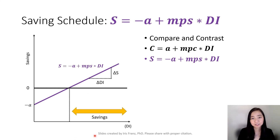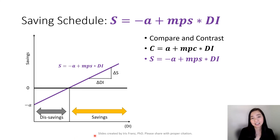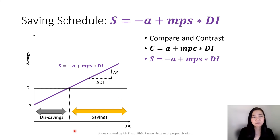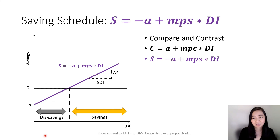Finally, if your saving is positive, then we have savings. If your saving is negative — below zero — then you are dis-saving.